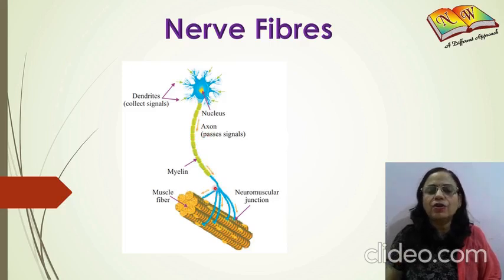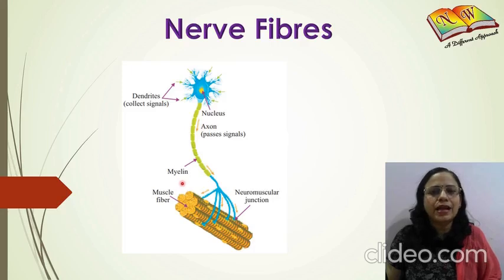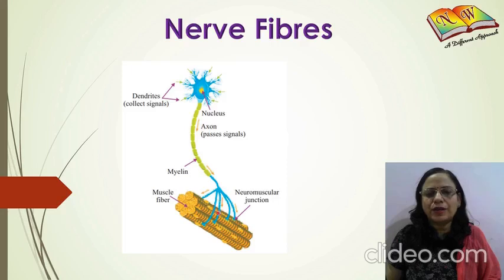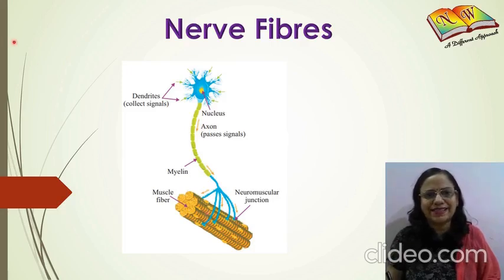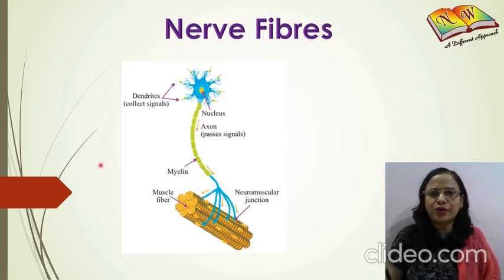On the axon there is a sheath of myelin, which is a kind of protein that acts as an insulator and helps in quicker transmission of impulses down the neuron. At the end, the axon branches out into a number of fine thread-like structures known as nerve endings, which transmit the message to the next neuron or to the muscle fiber.